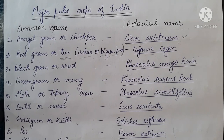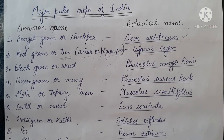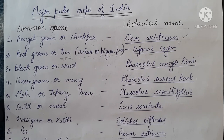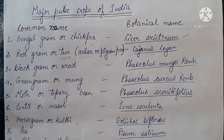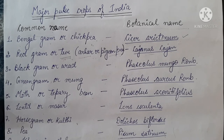Some other pulses of importance not listed here are cowpea, cluster bean or guar, French bean or kidney bean (that is rajma), and soya bean, with scientific name Glycine max. These are the most important pulses grown in India.